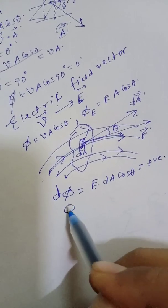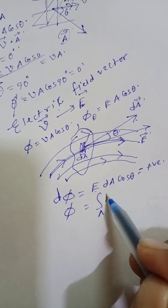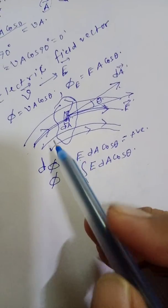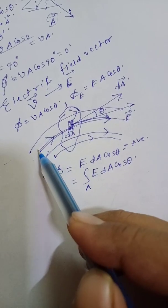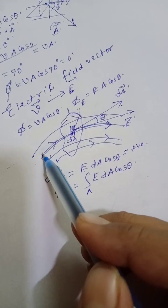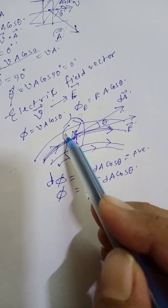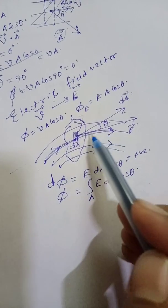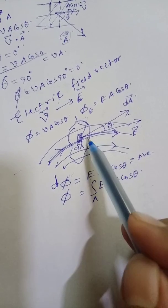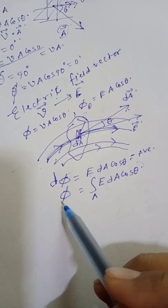The flux linked with the total area, if you calculate phi, that will be equal to the surface integral — E dA cos theta. The electric lines of force on the left side of the surface are entering the surface, and the lines on the right side are leaving the surface. When the flux of lines on the right side of the surface is considered, you get theta as an acute angle and that flux will be positive.